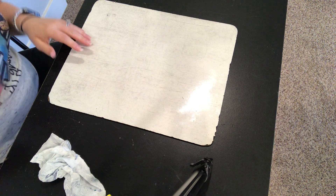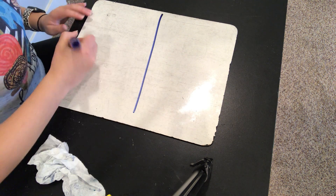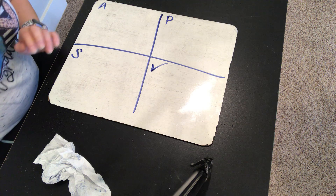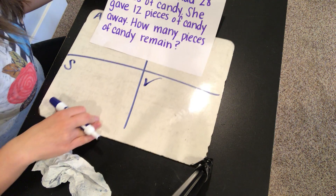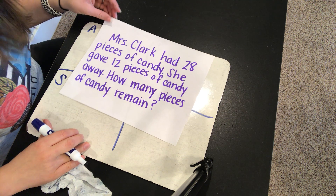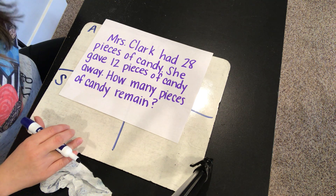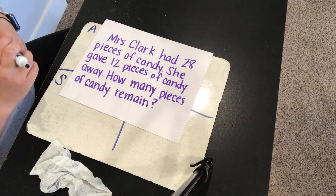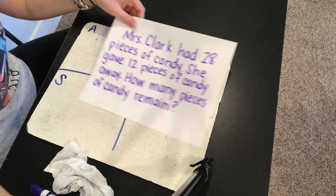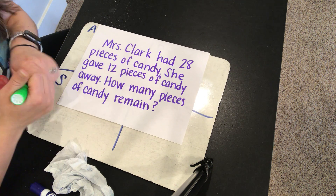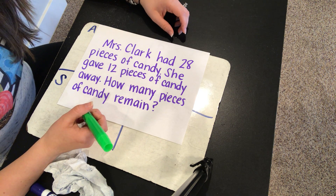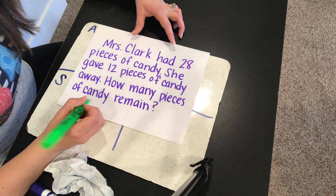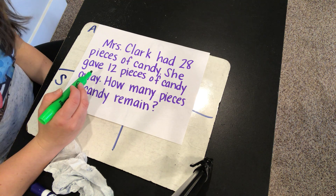We're going to talk now about a word problem that I have for you, and we're going to use APPS Check to help us solve it. So here it is. The first thing that we're going to do is the A of APPS Check, which is analyze the problem. So let's think about the problem and think about what's important. Let's go and look for the question first. Listen to the problem and listen for the question.